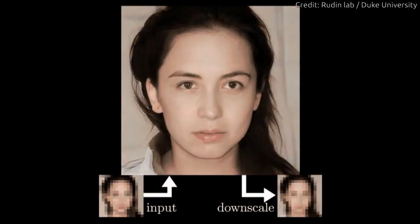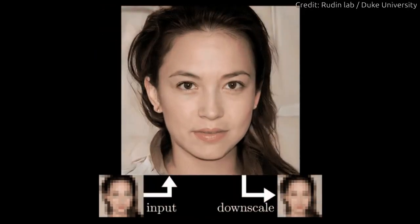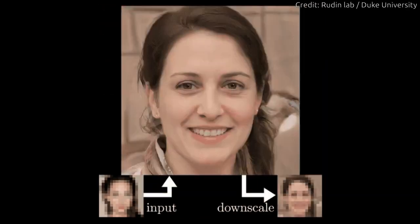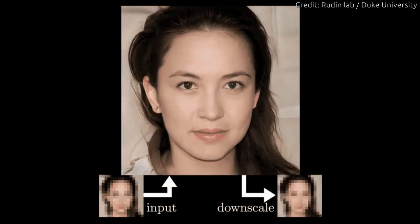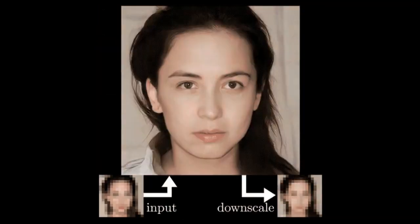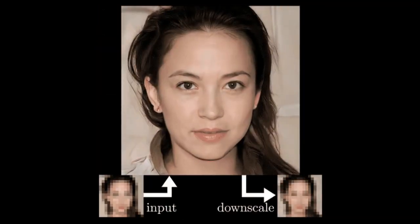Duke University researchers have developed an AI tool that can turn blurry, unrecognizable pictures of people's faces into eerily convincing computer-generated portraits in finer detail than ever before.